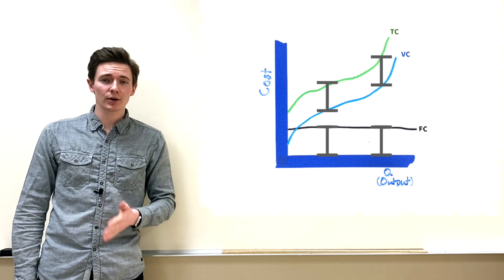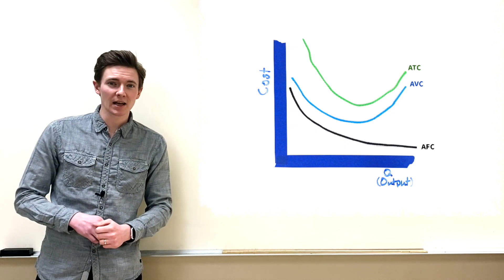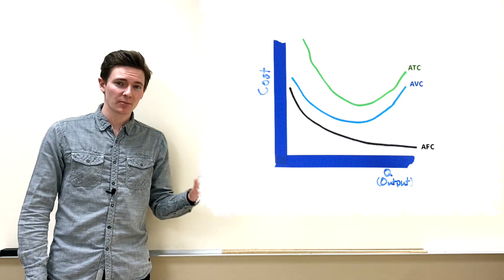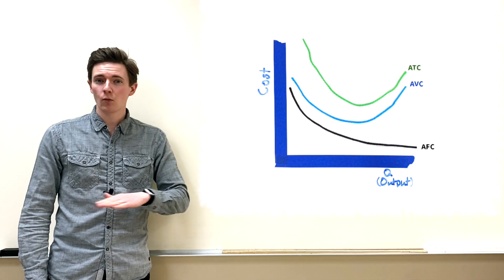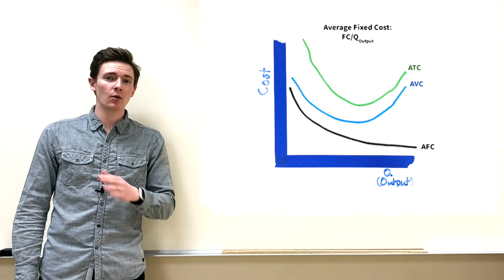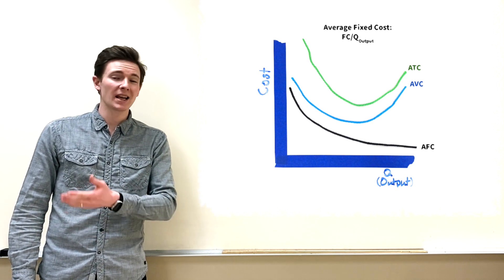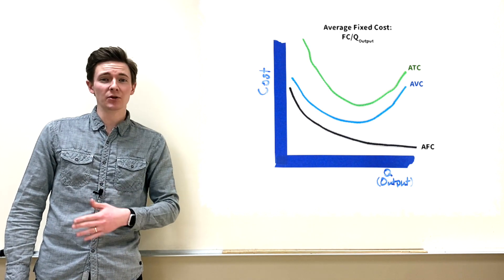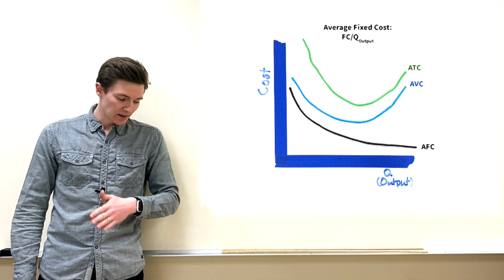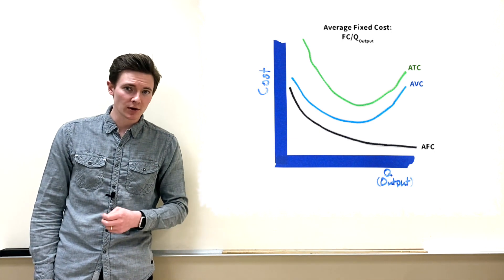Next we have our averages — per unit cost curves. If fixed cost is, say, $100, then average fixed cost at one unit is $100, at two units it's $50, at three units it's $33.33, and so on. Average fixed cost diminishes as output increases, getting closer and closer to zero but never quite touching it.